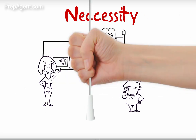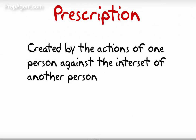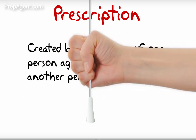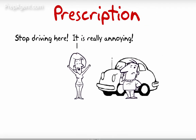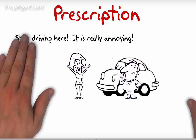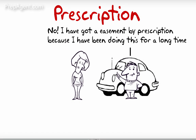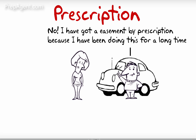An easement by prescription is created by the actions of one person against the interests of another. For example, every night when your neighbor Joe comes home, he drives his car across a corner of your property. You see him, but never stop him, and he does it for a long time. Eventually you get tired of it and tell him to stop, but he says no — he's got an easement by prescription. Joe takes the matter to court and the court agrees with him. Joe now has a permanent easement by prescription across your property. Easements by prescription require a court order as they are the result of a lawsuit.